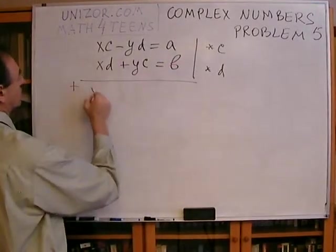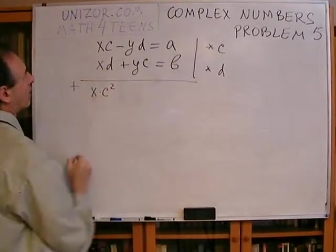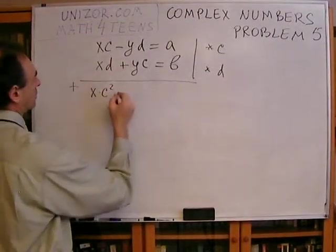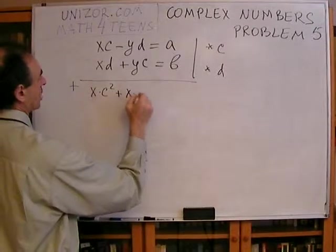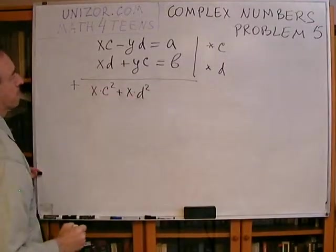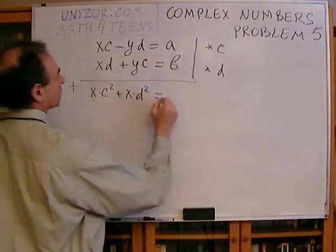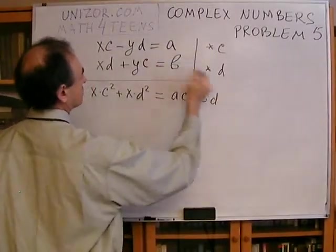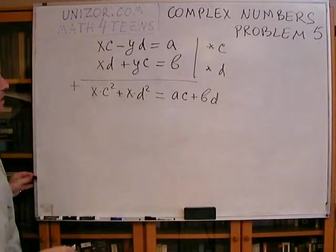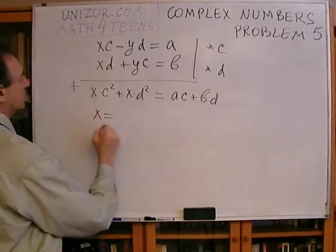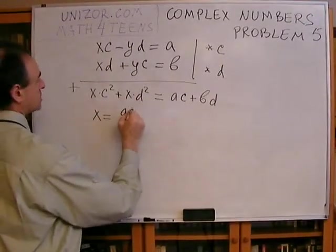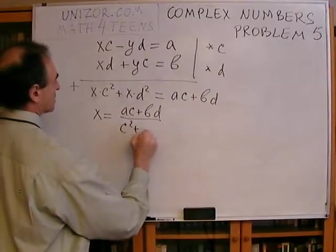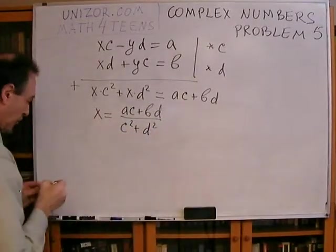So, if we multiply it by C, it would be X times C squared, and this multiplied by D would be X times D squared. And that's equal to AC plus BD, from which we conclude that X is equal to AC plus BD over C squared plus D squared.